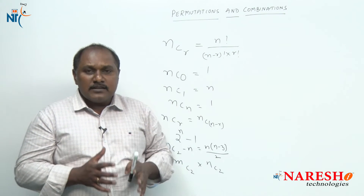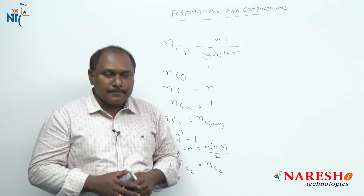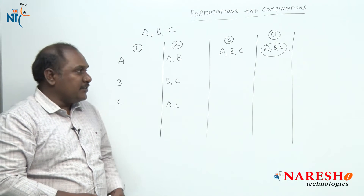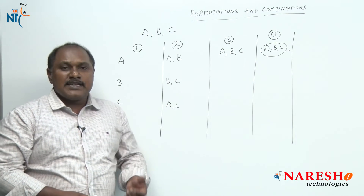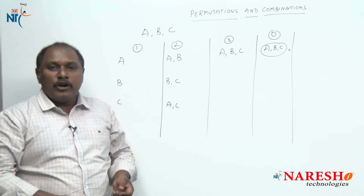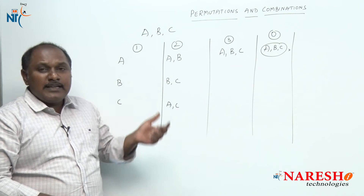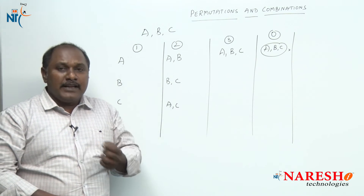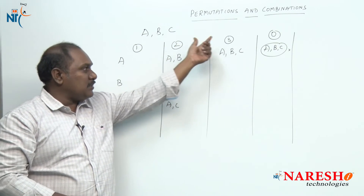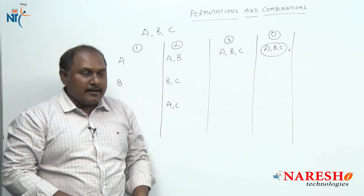Before we start the session, let us look into an example. In the first session of permutations and combinations, we came across this example: three friends A, B, C go into a movie. The possibilities are they may get one ticket, two tickets, three tickets, or they may not get any ticket.